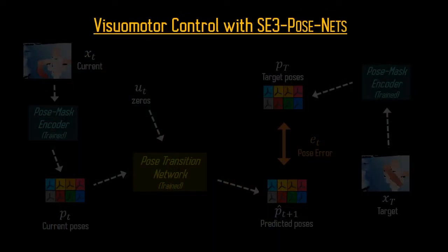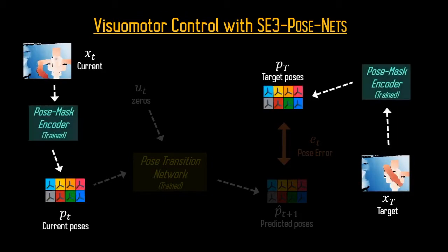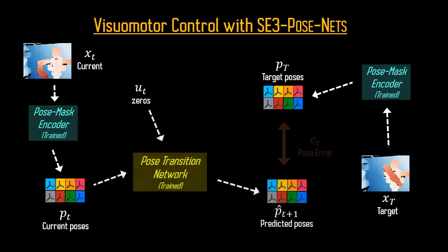Next, we use our learned dynamics model for visual motor control. Given an input and target point cloud, we first generate the corresponding poses using our trained network. We then hypothesize controls and predict the resulting next pose through our learned dynamics model.